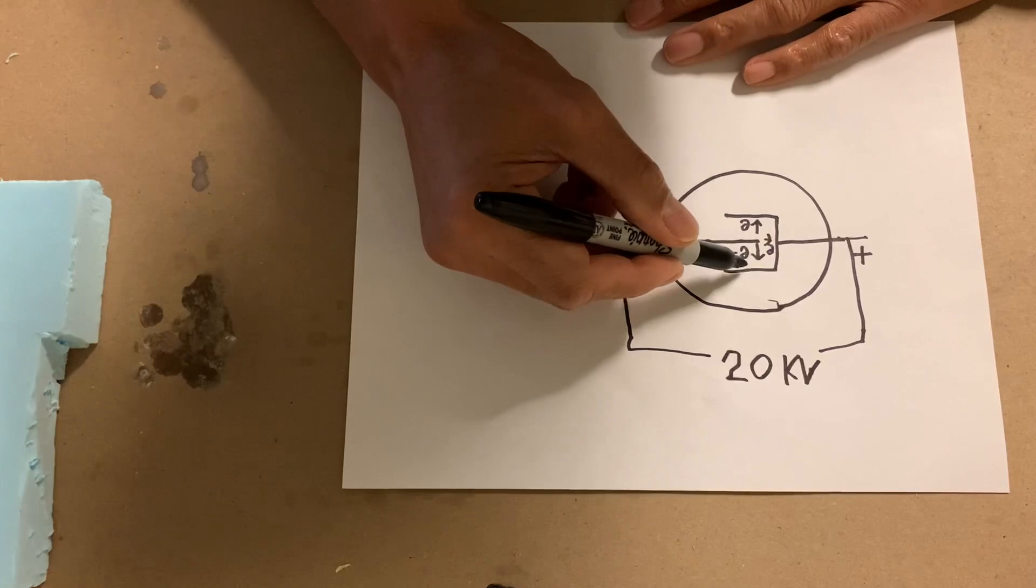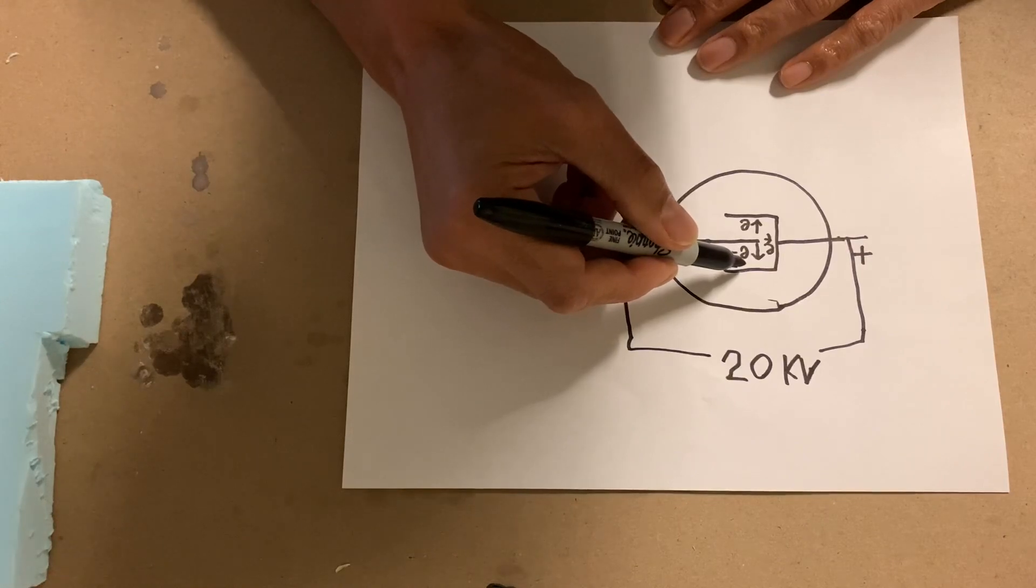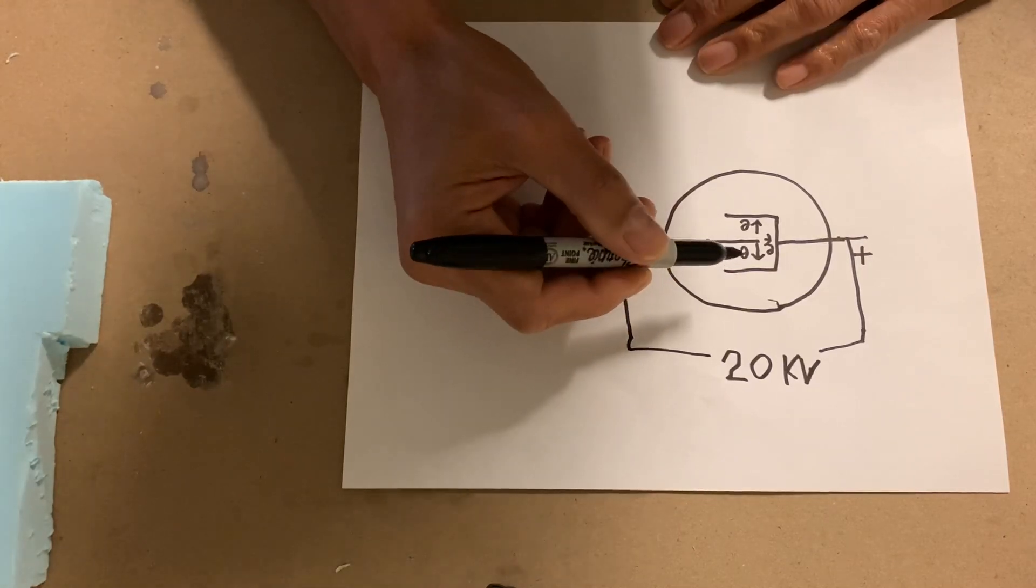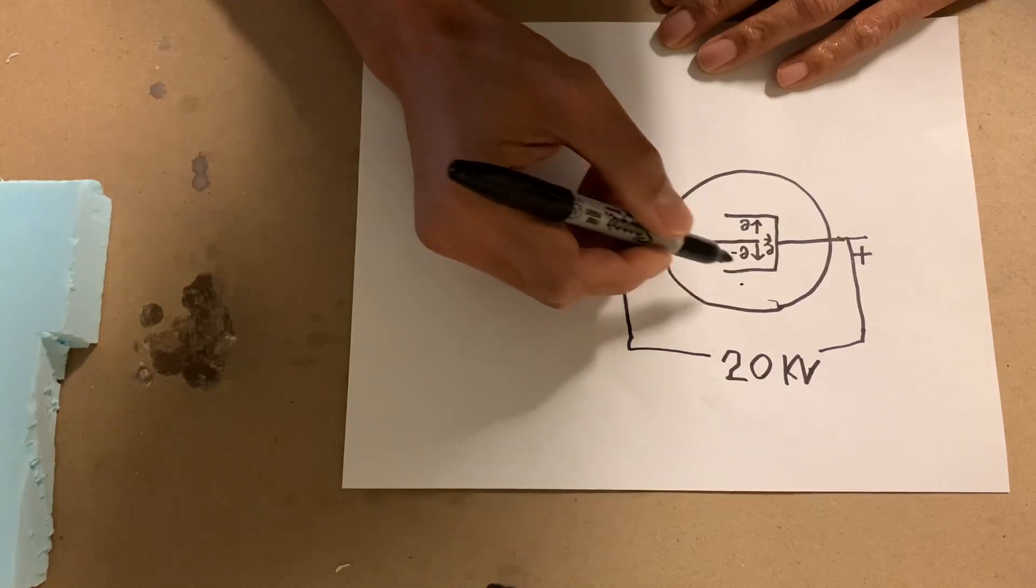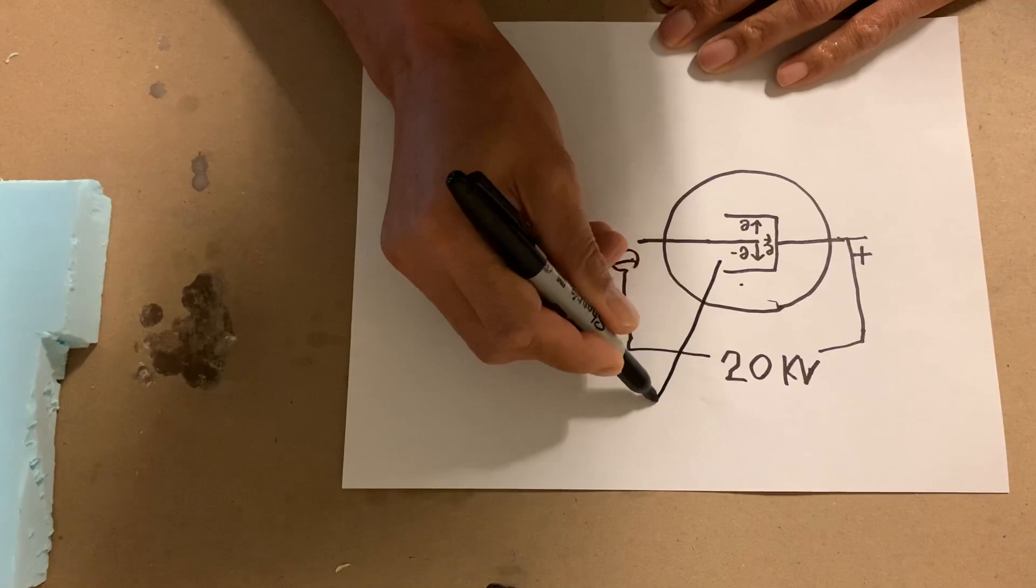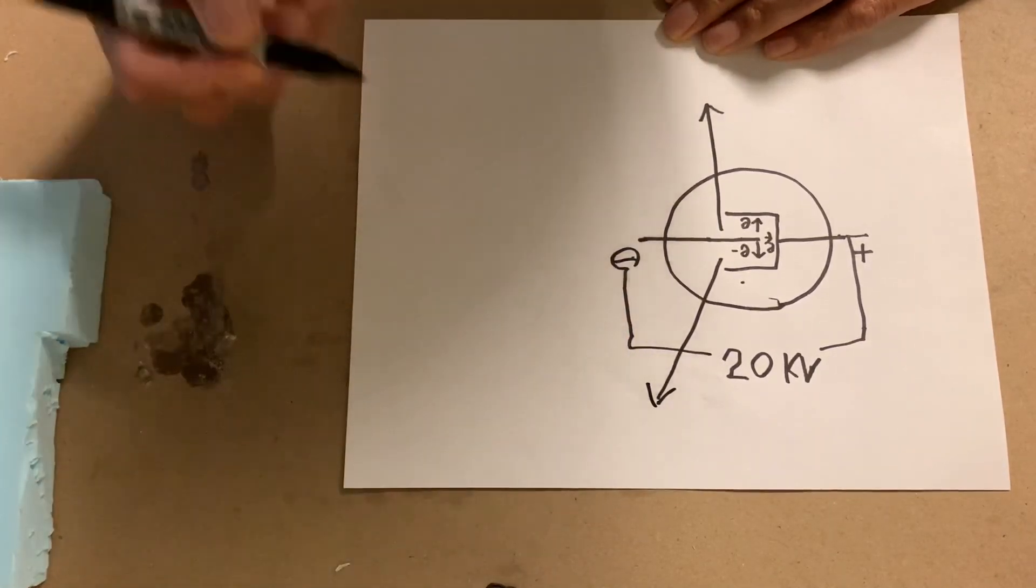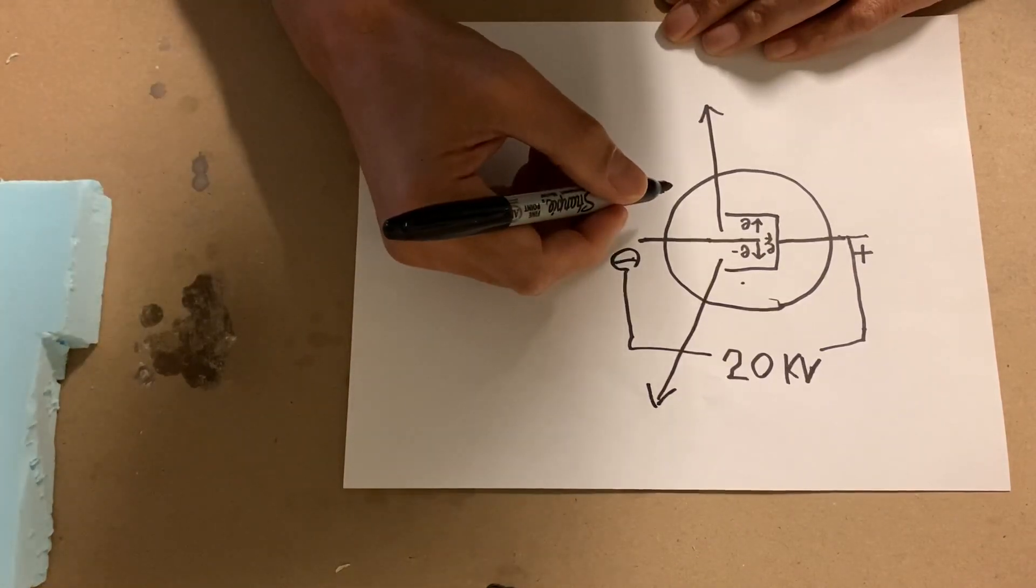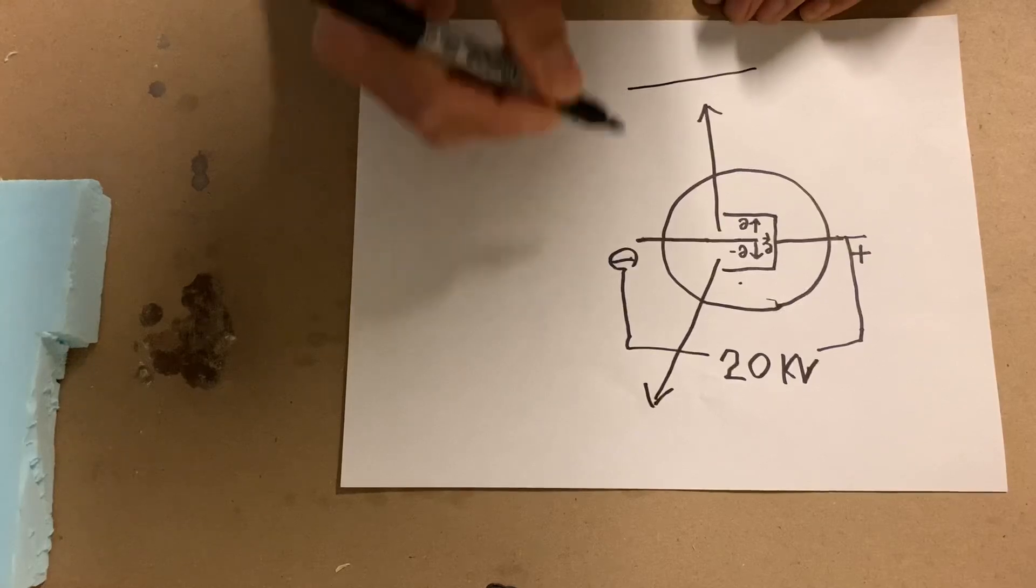And what happens is you get what's called bremsstrahlung rays produced, and bremsstrahlung is X-rays. And those have enough energy to penetrate the glass wall of the tube, so the strongest production of bremsstrahlung is approximately at that angle.